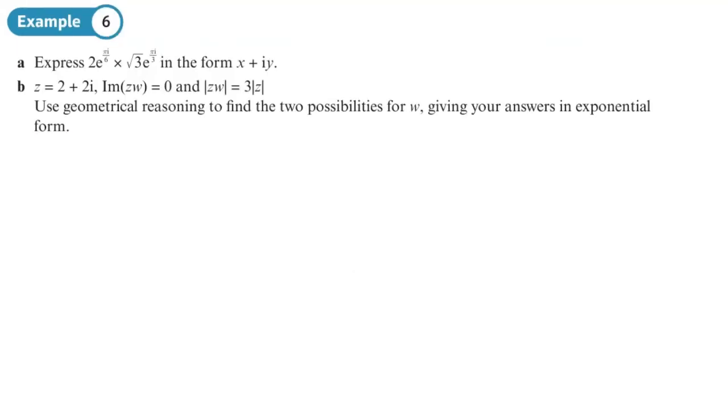Okay, right, let's have a look at this. In part a, we want to do that multiplication, so we're going to multiply the r's together and then we're just going to add the arguments together. So one argument is π/6, the other one is π/3. Now that's like 1/6 plus 2/6 which is 3/6, and that just simplifies to π/2.